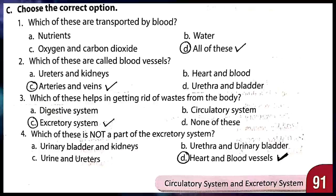Third — which of these help in removing waste from the body? Correct answer is C — excretory system. Fourth — which of these is not a part of the excretory system? Excretory system के parts हैं: kidney, ureter, urinary bladder, urethra — but heart and blood vessels are not part of excretory system. Correct answer is D.